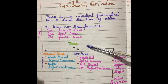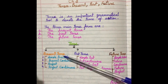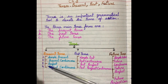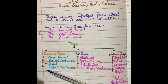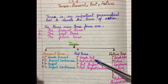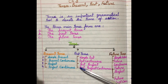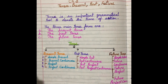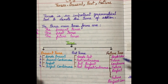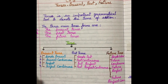Now, each tense has four subtypes. हर एक tense की four subtypes होती है. In present tense: simple present tense, present continuous tense, present perfect tense, and present perfect continuous tense. Same for past tense: simple past tense, past continuous tense, past perfect tense, and past perfect continuous tense. Just like this, future tense also has four types: simple future tense, future continuous tense, future perfect tense, and future perfect continuous tense.